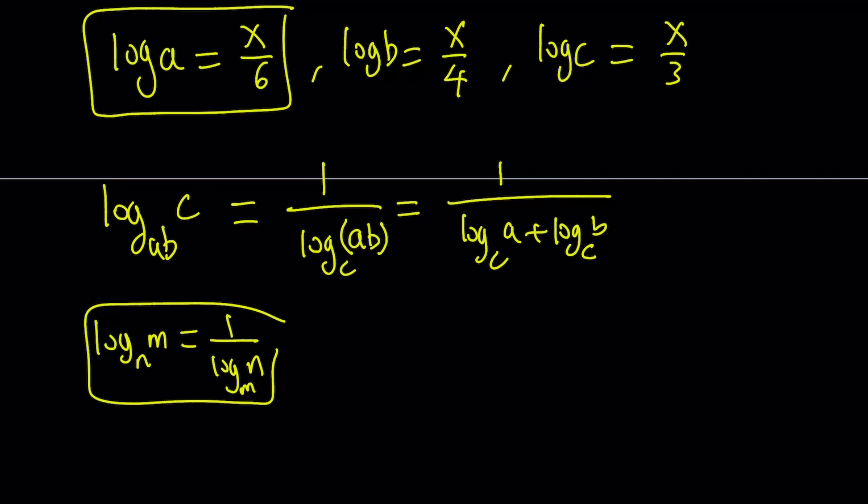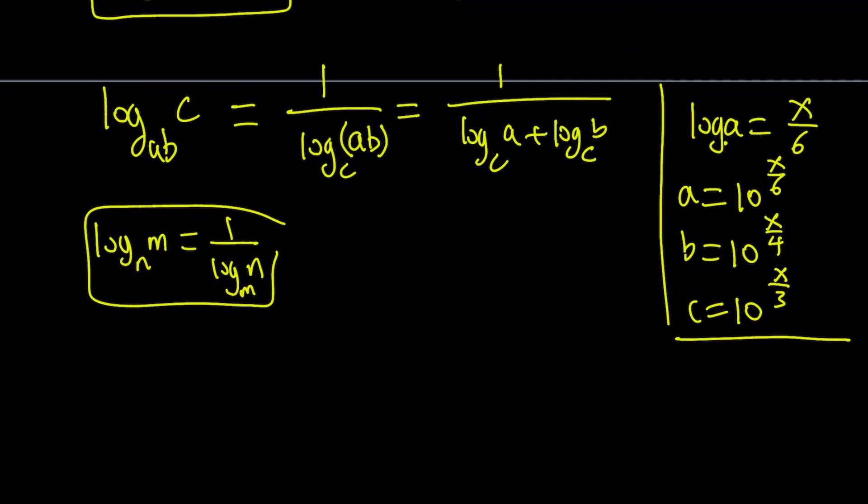So here's what I'm going to do. I'm going to go ahead and write this log A equals X over 6. By using definition of logarithms, the base is 10, remember, I can write this as A equals 10 to the power X over 6. Make sense? Similarly, I can write B equals 10 to the power X over 4 and C equals 10 to the power X over 3. So I wrote each one of these as exponentials because I want to plug them in here.